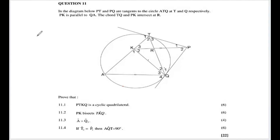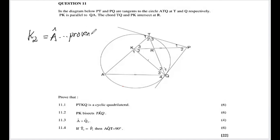For 11.3, recall that whatever you used in 11.2 comes in handy for 11.3. From the previous question we proved K2 equals angle A — write 'proven above.' Now consider the parallel lines PK and QA.